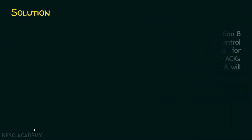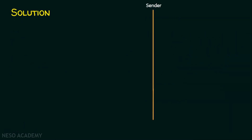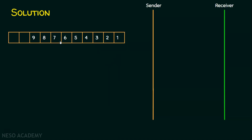There is a sender, station A, and a receiver, station B. There are 9 frames numbered sequentially 1 through 9. The window size is 3, meaning the sender will send 3 packets and will not send any further packet before getting an acknowledgement for the first packet after sending those 3 packets.